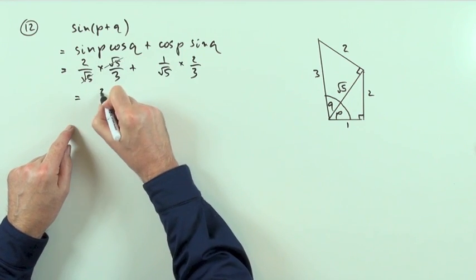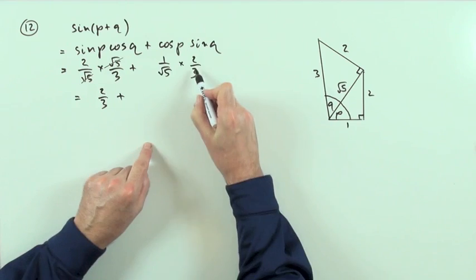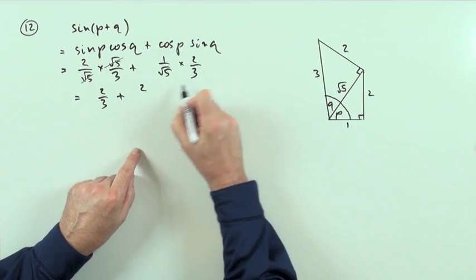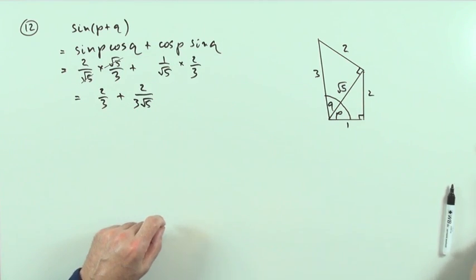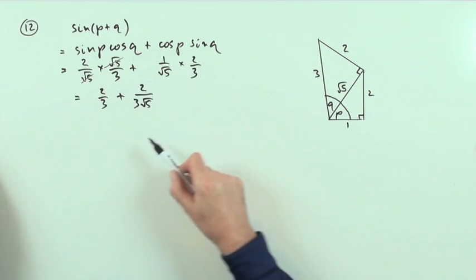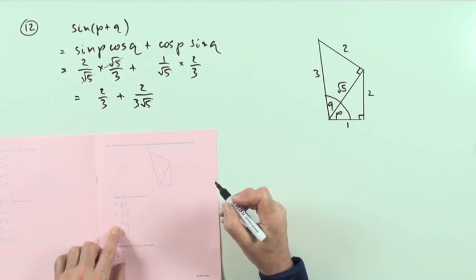So those parts would go, leaving you with two-thirds plus, and then multiplying the numerators and denominators, two over three root five, rather than doing what you normally would have done, which is just put them together over three root five. That's c.